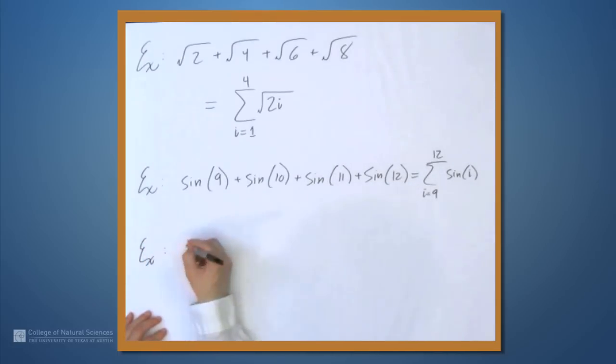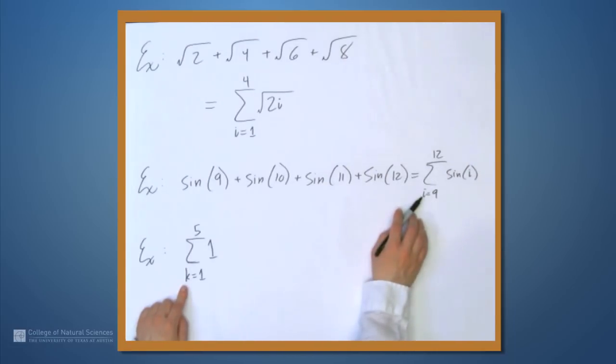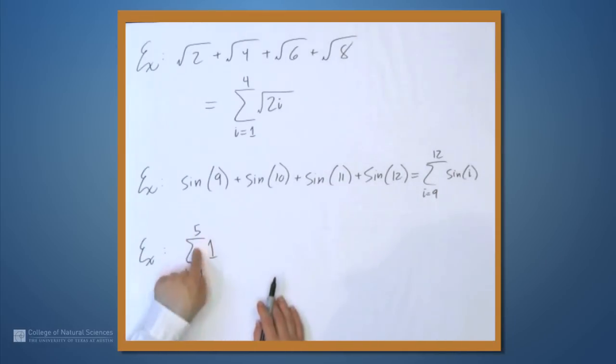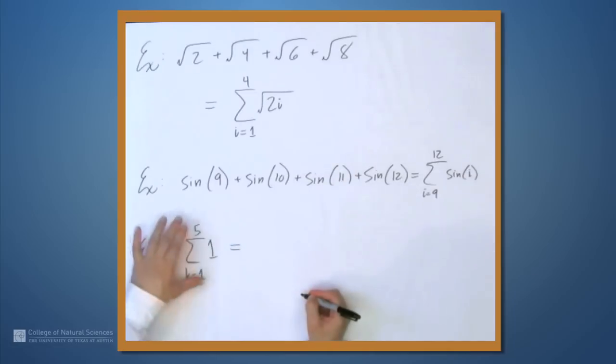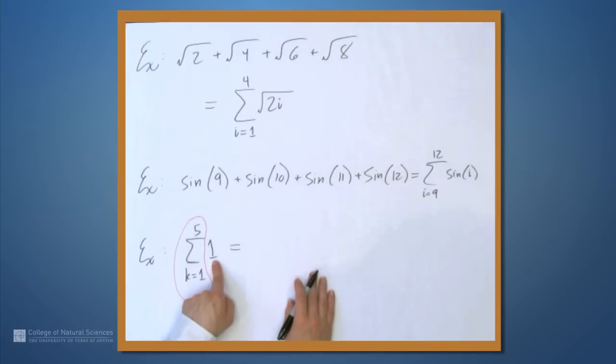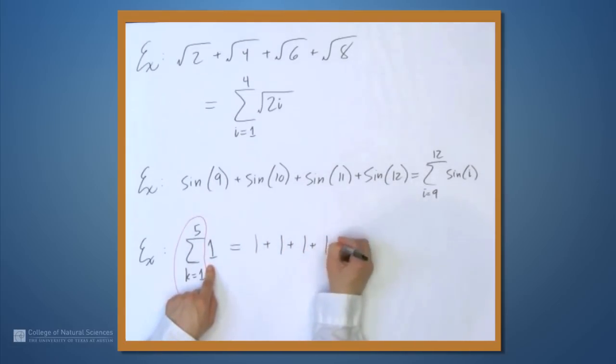Now, what if we have something like this? So if all we have is a 1, and I'm going to change this variable from i to k. There's nothing sacred about i. We use it often, it's a good index letter. But we can also use k or j or any other number that happens to be handy. But what if we have something like this, where this expression in the summation doesn't have this variable in it? Well, the general idea behind this is this part indicates that we write the expression here 5 times. And every time we see a k, we'll replace it with the corresponding number 1, 2, 3, 4, 5. But there's no k, so there's nothing to replace. So this is simply the sum of 5 copies of 1. So this is 5.